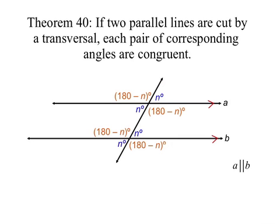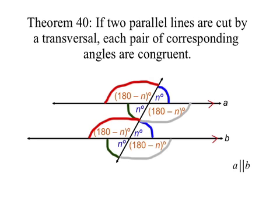Theorem 40: if two parallel lines are cut by a transversal, each pair of corresponding angles are congruent. There's our first pair of corresponding angles — each n degrees. There's a pair that are each 180 minus n degrees, another pair each n degrees, and finally our fourth pair, 180 minus n degrees each.